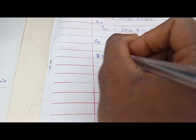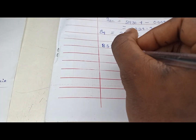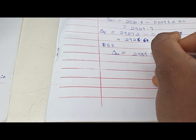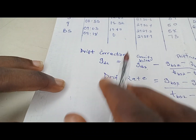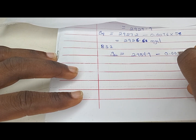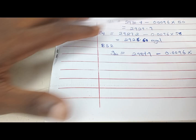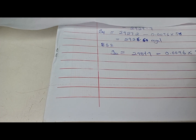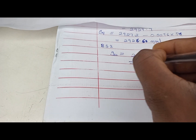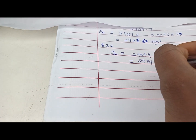For the last one — base station two — GDC equals 2934.9 minus 0.0096 times 73. The change in time there is 73 minutes. Using the calculator: 2934.9 minus (0.0096 times 73) gives us 2934.2 milligals.